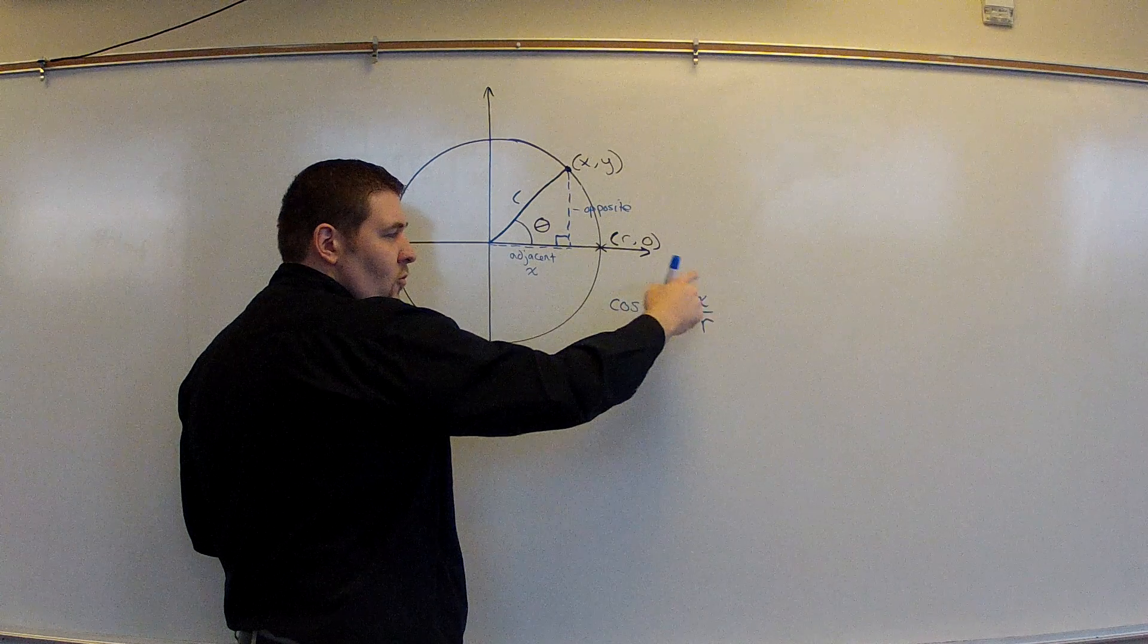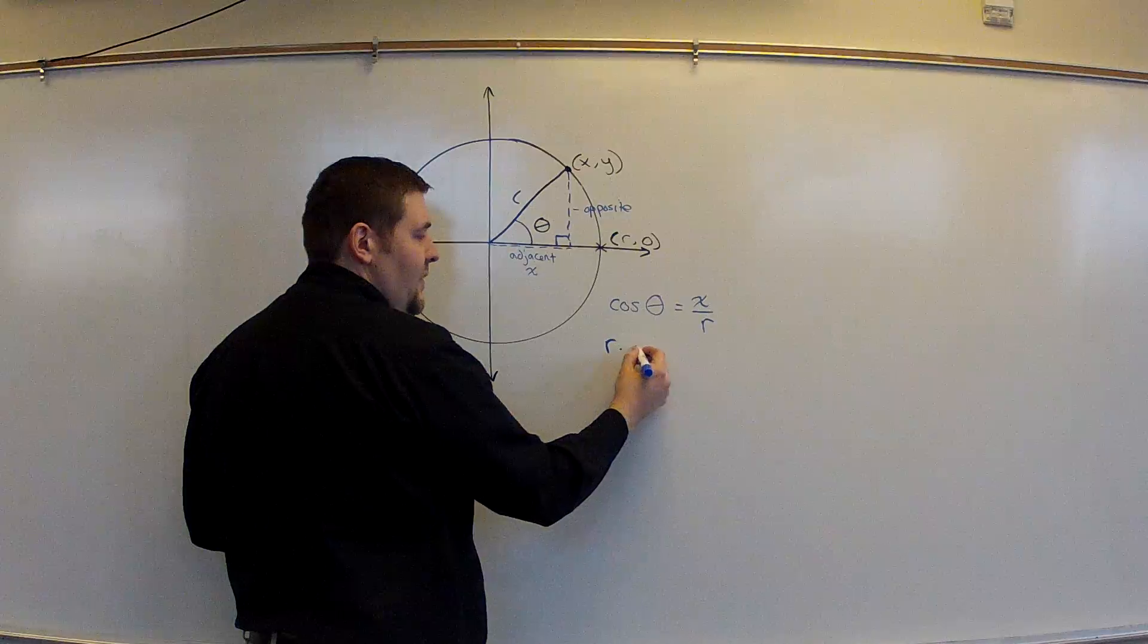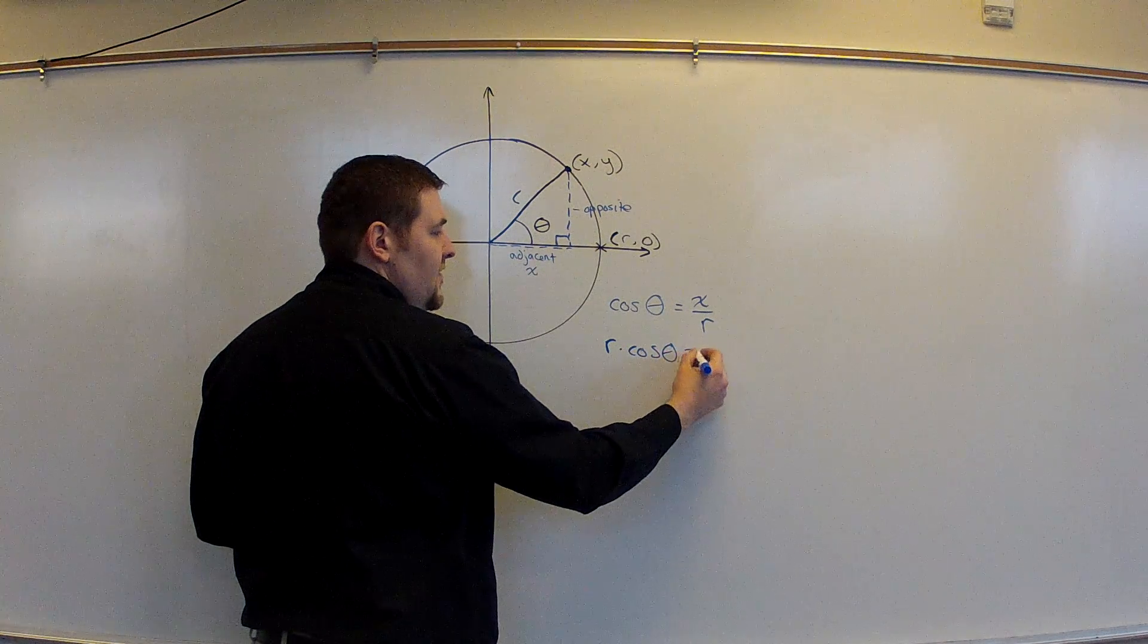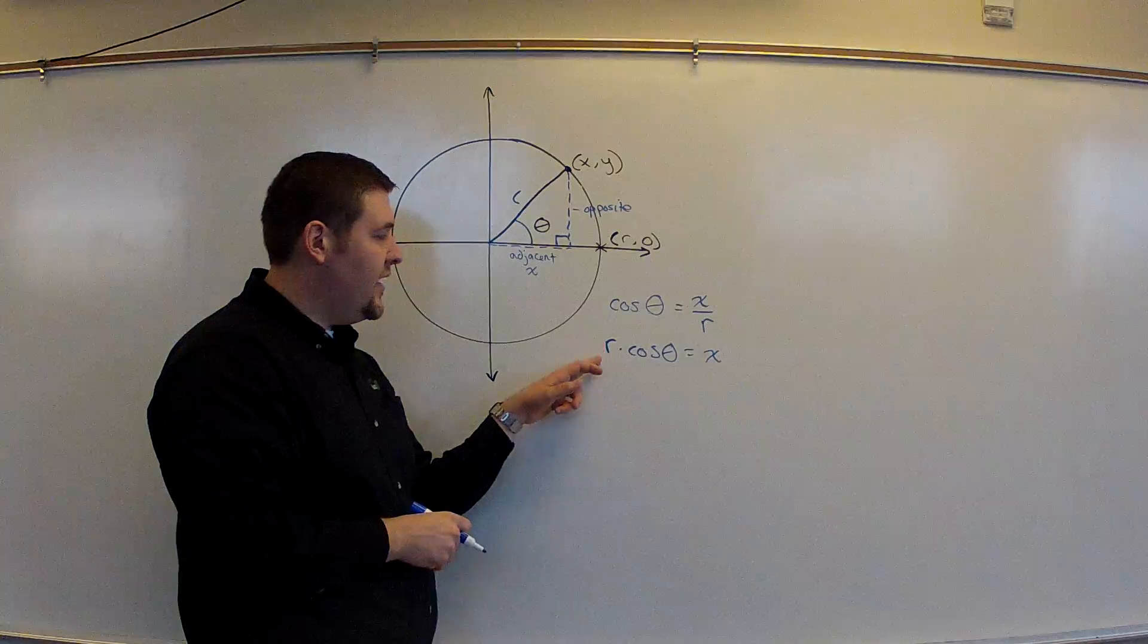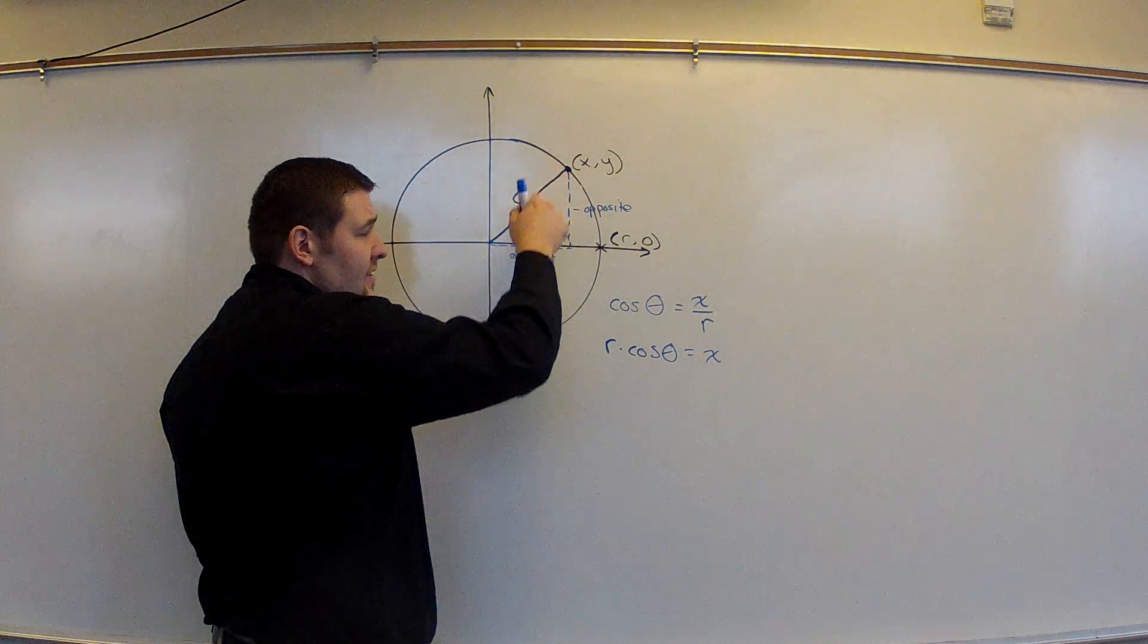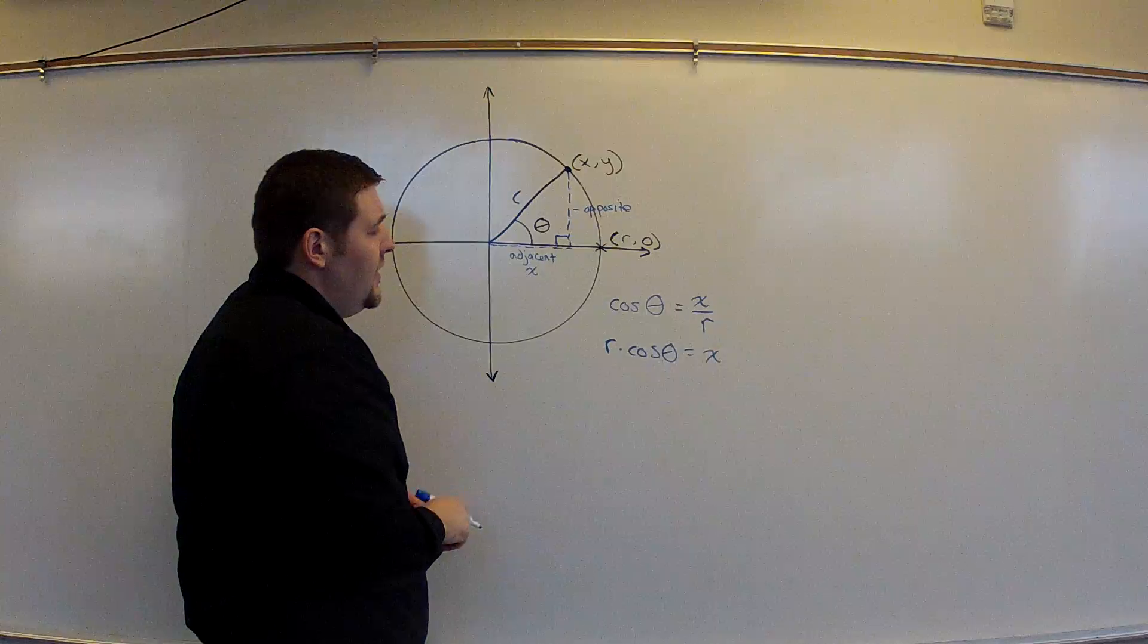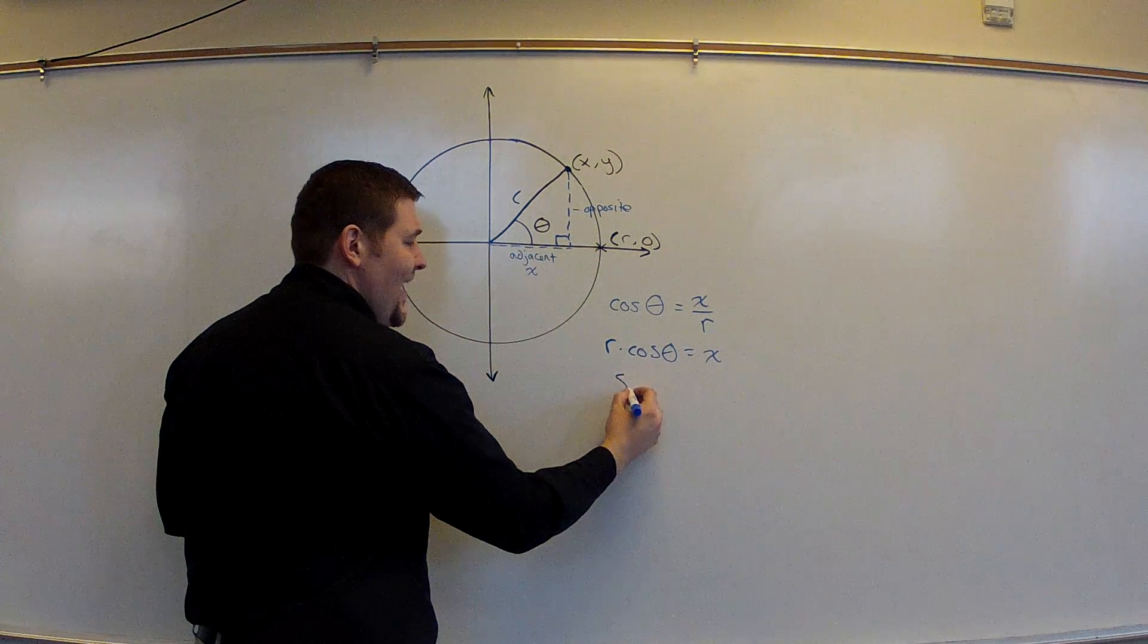I'm going to rewrite this one more way. I'm going to solve for x. In doing so, I would multiply r on both sides of the expression to get r times the cosine of theta is equivalent to x. Therefore, your x component is your radius times the cosine of theta. Let's write the y component as well, the vertical component. That one would be the opposite side to theta, so we're going to use the sine function.